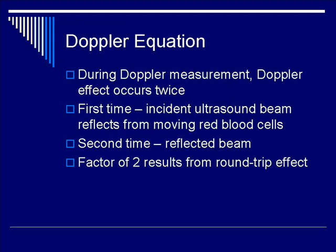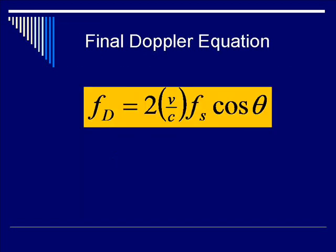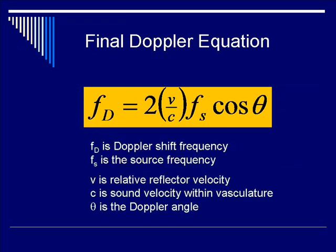So the equation becomes: F_D = V/C × F_S × cosine(theta). We're not done yet — during Doppler measurement, the Doppler effect occurs twice: first when the ultrasound beam reflects off the moving red cells, and second when the reflected beam returns to the transducer, forming a round-trip effect. Adding a factor of 2 completes the final Doppler equation: F_D = 2 × V/C × F_S × cosine(theta).